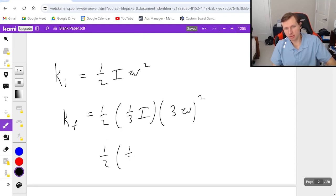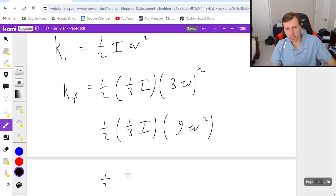Now they don't cancel exactly the one-third and the three because we are squaring the three omega. So in other words it's one-half times one-third I times nine omega squared.